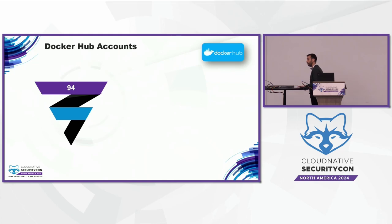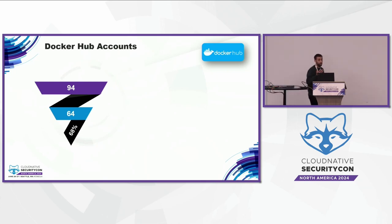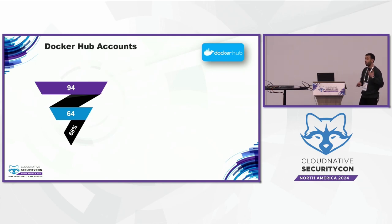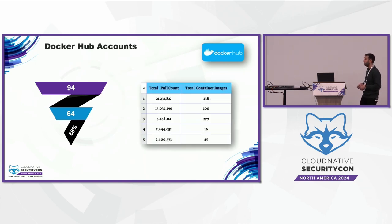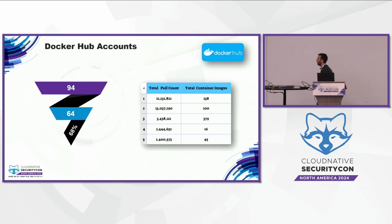Another example involved Docker Hub accounts found exposed in secret files on GitHub. In our research we found 94 different Docker Hub accounts, and 64 of them were valid without two-factor authentication. We could authenticate to these accounts. You can see in the table different accounts with a large number of pulled images and container images.